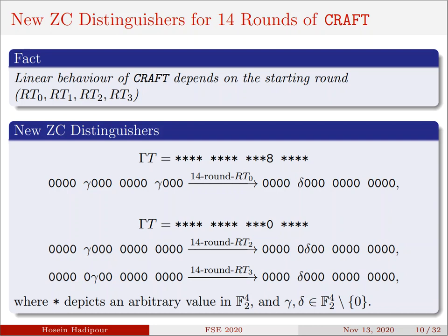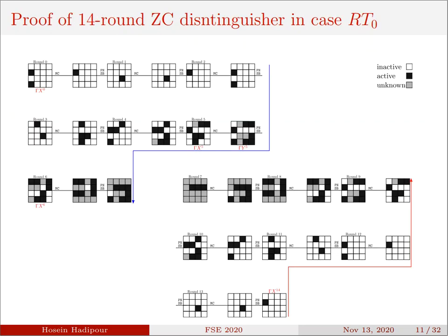Let's move on and take a look at our distinguisher for case RT0 in more detail. Using this shape, we proved that the correlation of linear approximation that is provided for 14 rounds of CRAFT in case RT0 must be zero. To do so, we follow the propagation of input and output linear masks for several rounds in forward and backward direction respectively. In this shape, white, black, and gray cells illustrate the inactive, active, and unknown cells respectively.